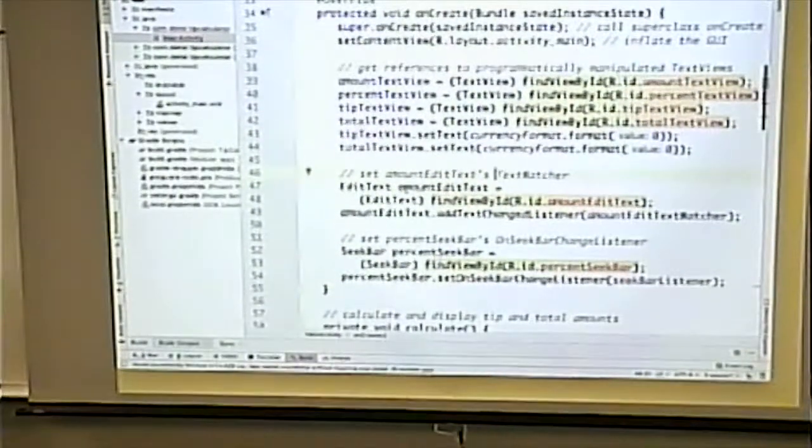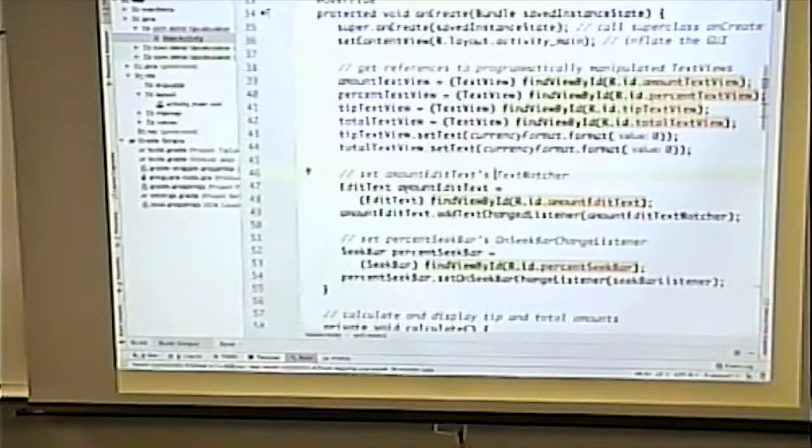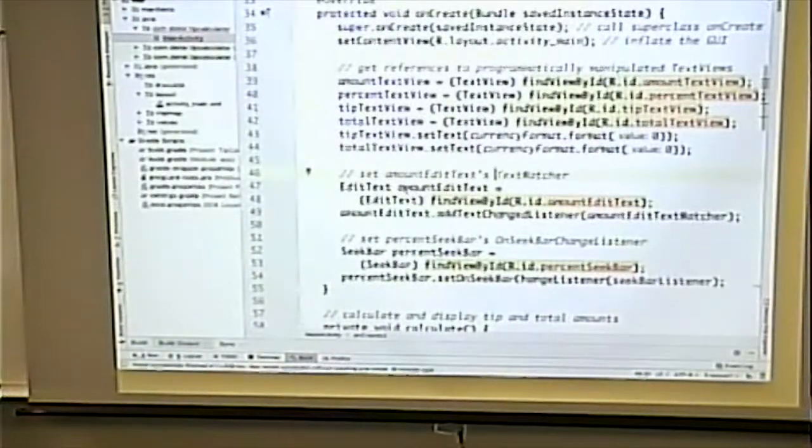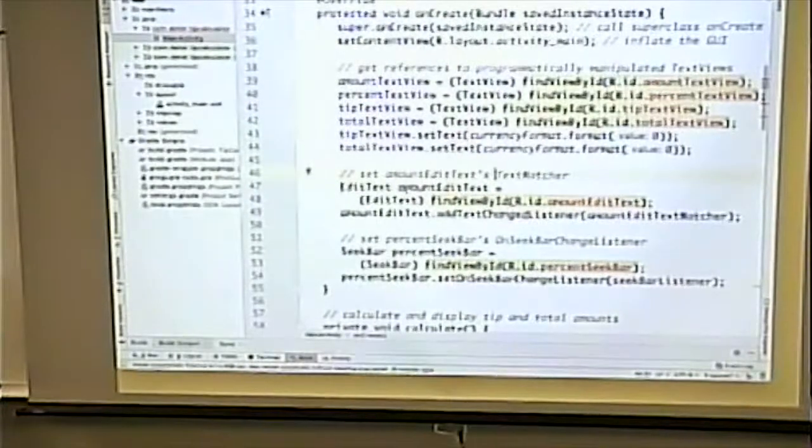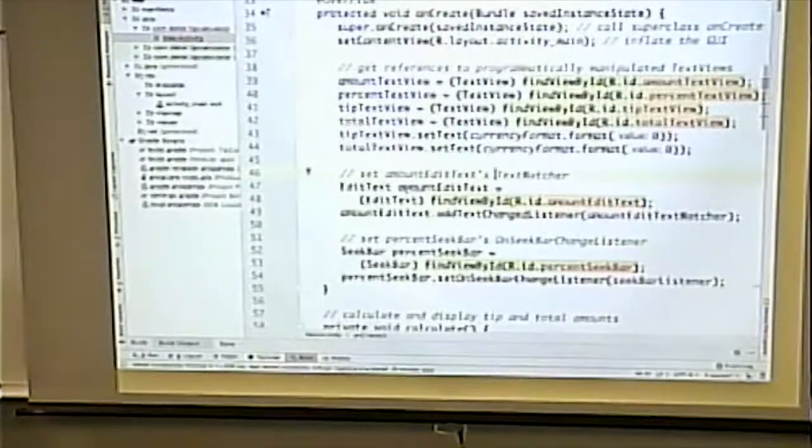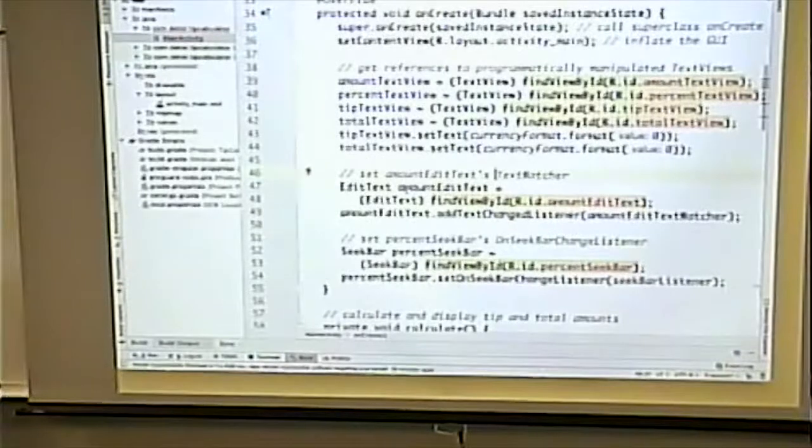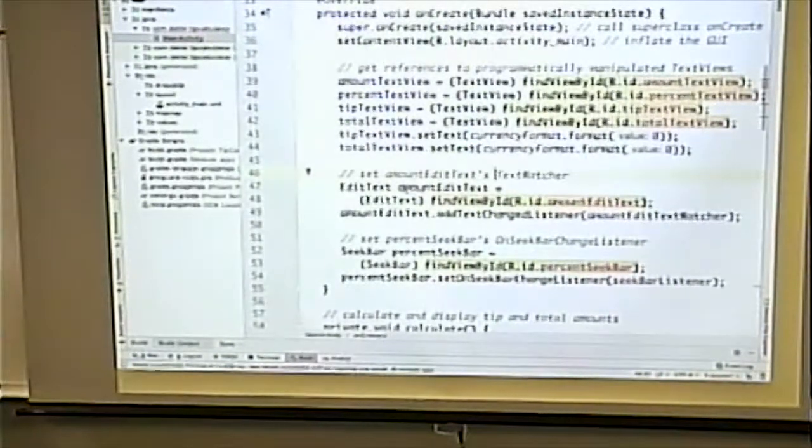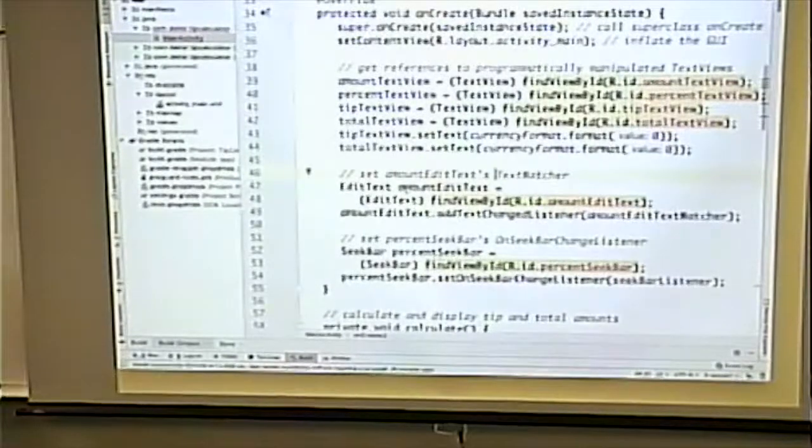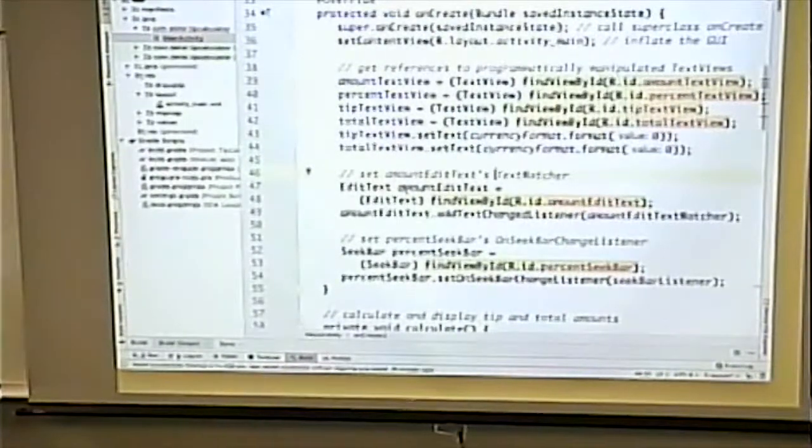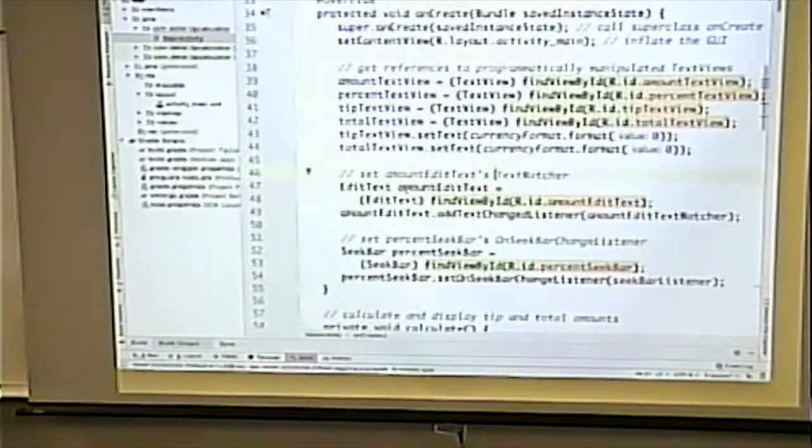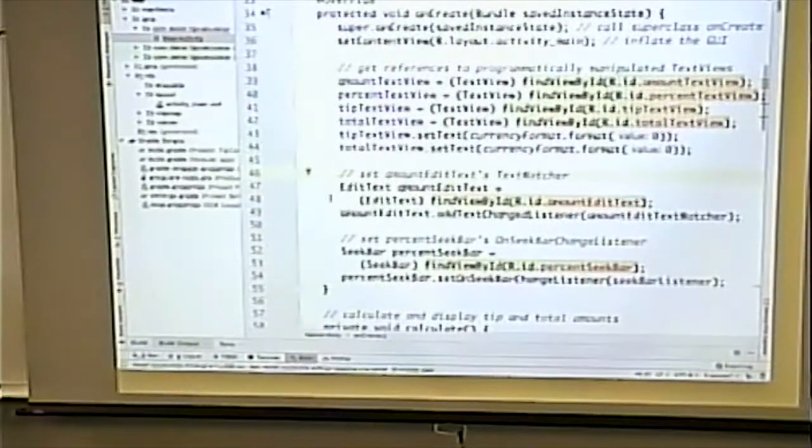We point to the edit text field. Notice this one isn't an instance variable. Really, the reason for that is the only reason we need to point to it is to set the listener. We point to the edit text field and we point to the seek bar with these two instructions.